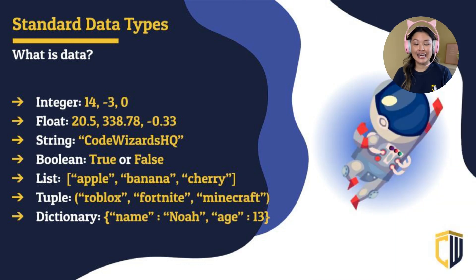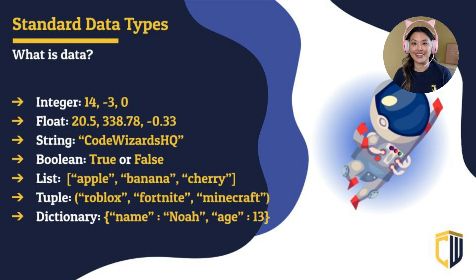So what is data? Data is information that is stored in your computer or in your code. It's a collection of numbers, letters, and symbols. Data can be broken down into groups, and these are what we call our data types — different types of data.